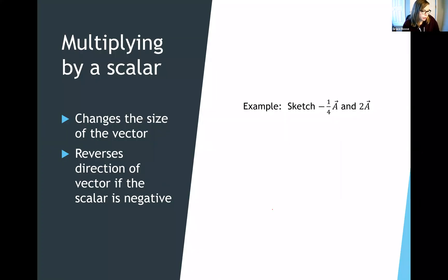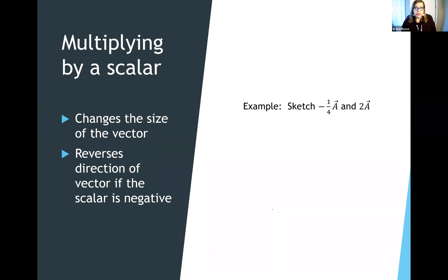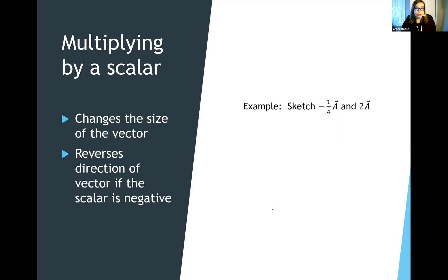The first operation is called multiplying by a scalar. A scalar is just a number. When you multiply a vector by a scalar, it has the effect of setting the scale — it can change the length of your vector. It can also change the direction of your vector if that scalar is negative.